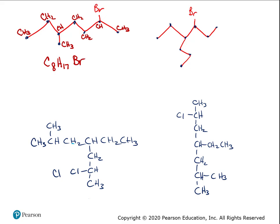So one molecule has eight carbons, C8H17Br, and the molecule on the other side has nine carbons. You can stop right there and say these are not related — they do not have the same number of carbons. They're not isomers at all. One has eight, one has nine, so we just put not related.